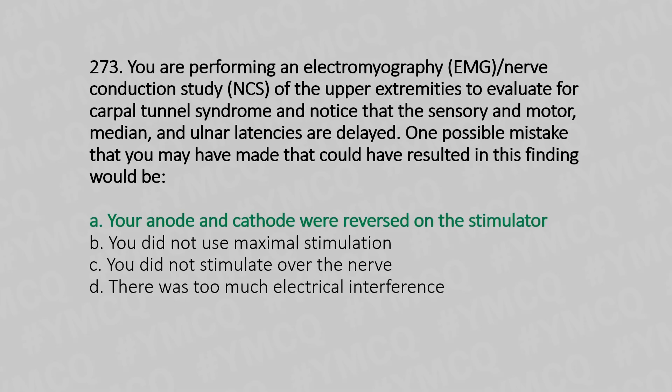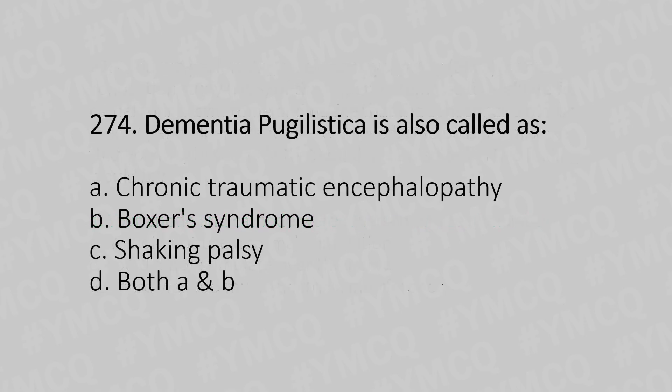Now let's move to question number 274. Dementia pugilistica is also called: Option A, chronic traumatic encephalopathy; Option B, boxer syndrome; Option C, shaking palsy; Option D, both A and B. And the answer is Option D, both A and B.